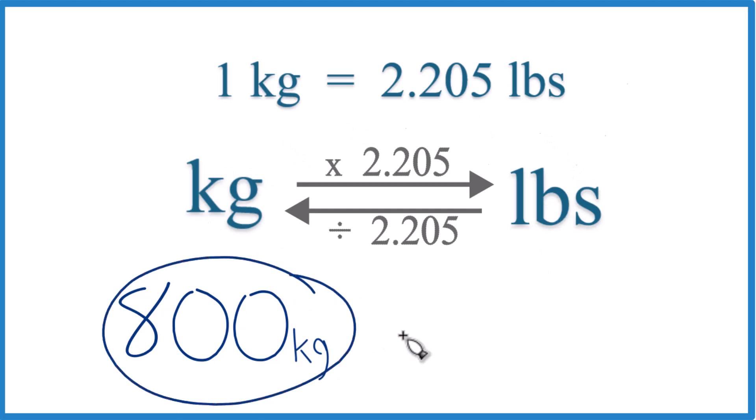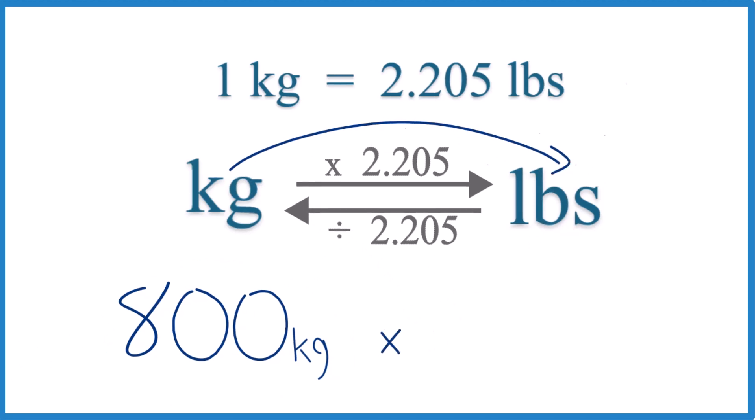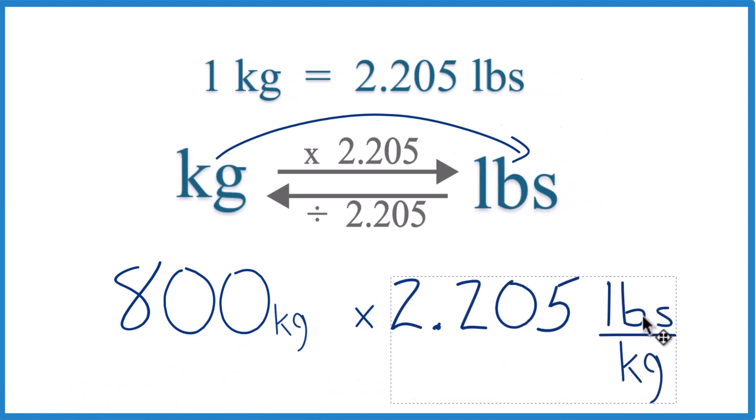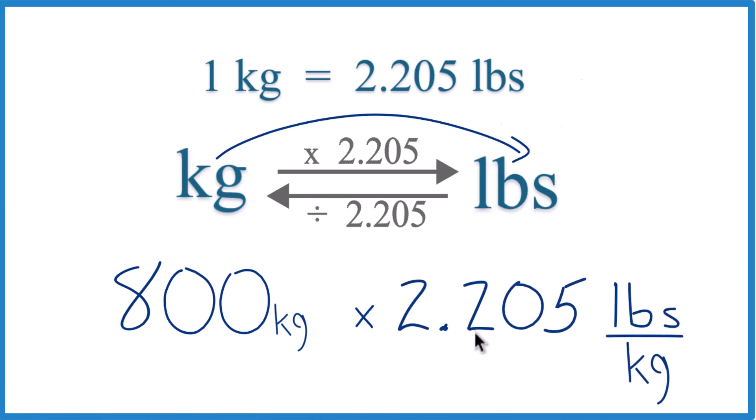We have 800 kilograms, so we're going to go from kilograms to pounds. We just multiply by 2.205. That's our conversion factor. And you can see it's 2.205 pounds per kilogram.